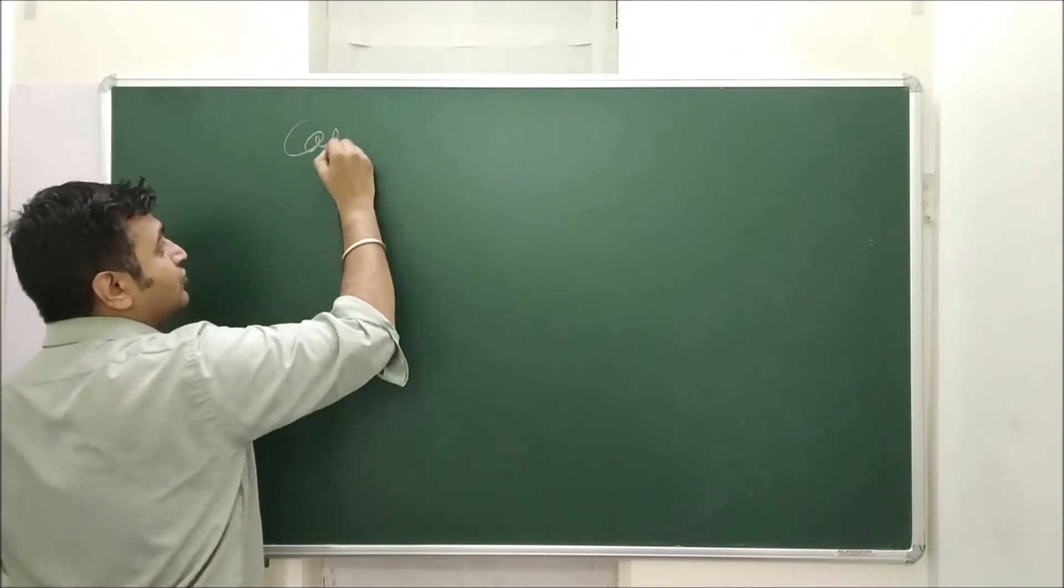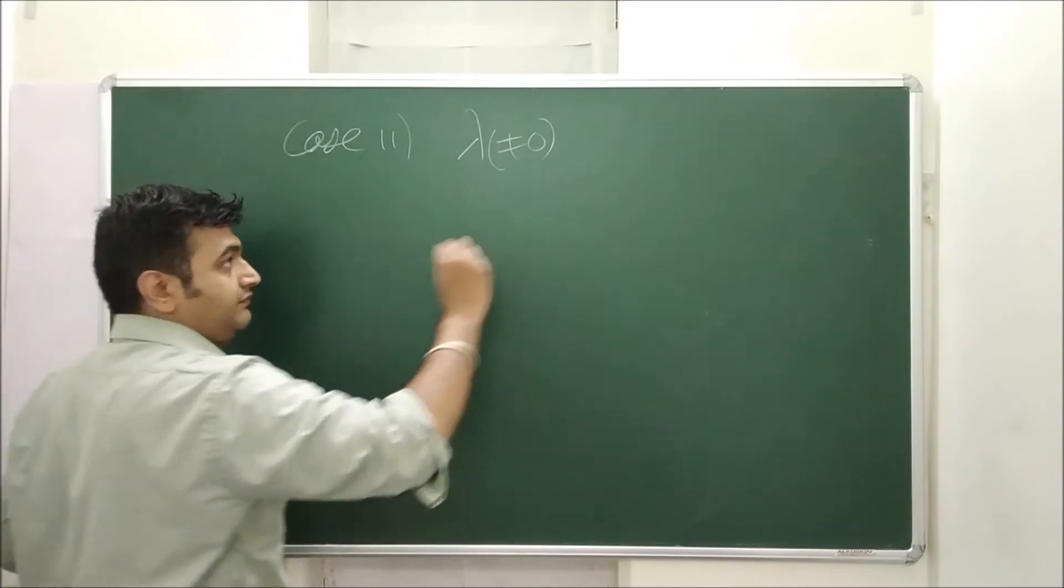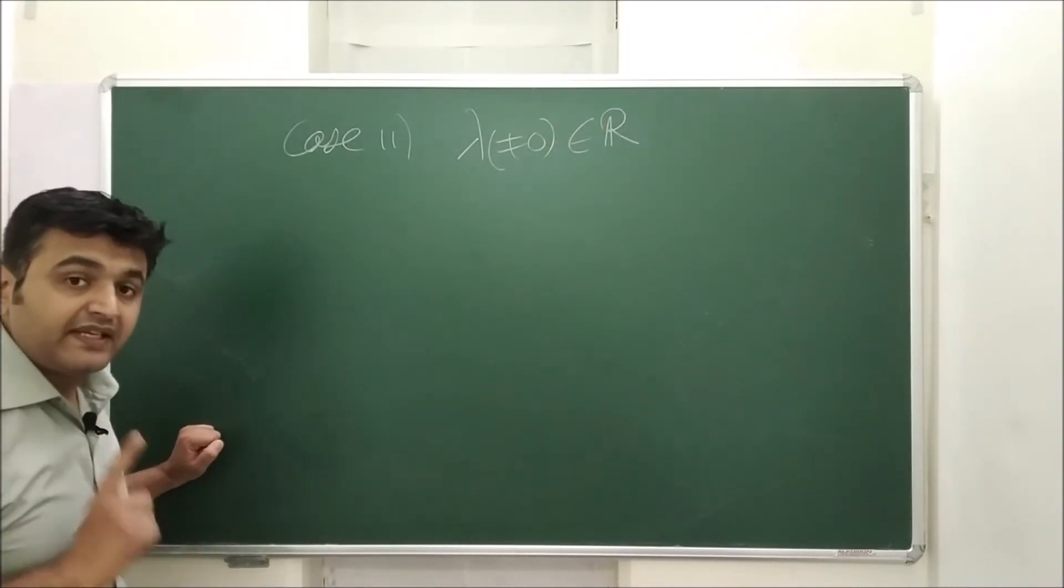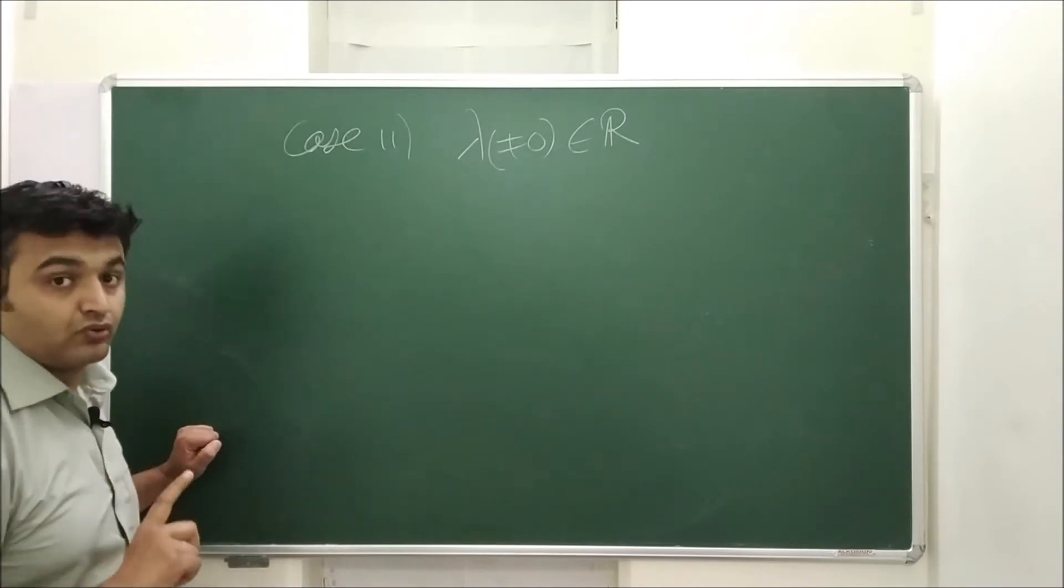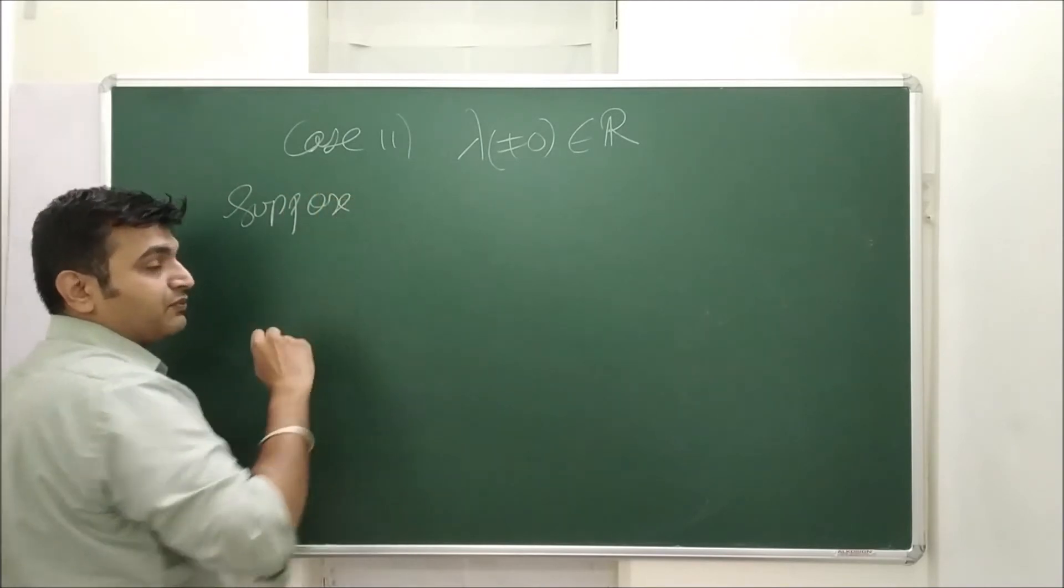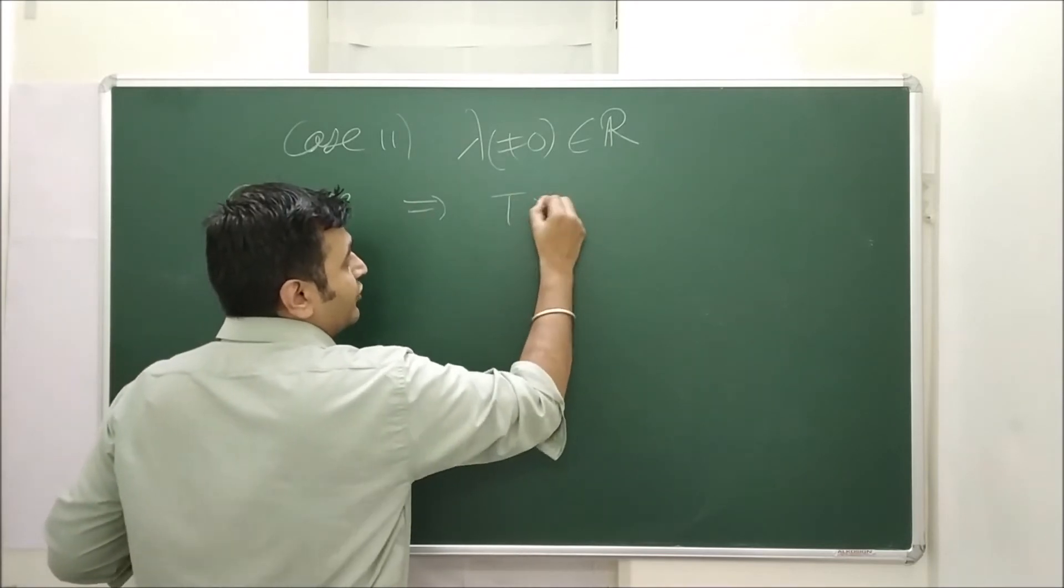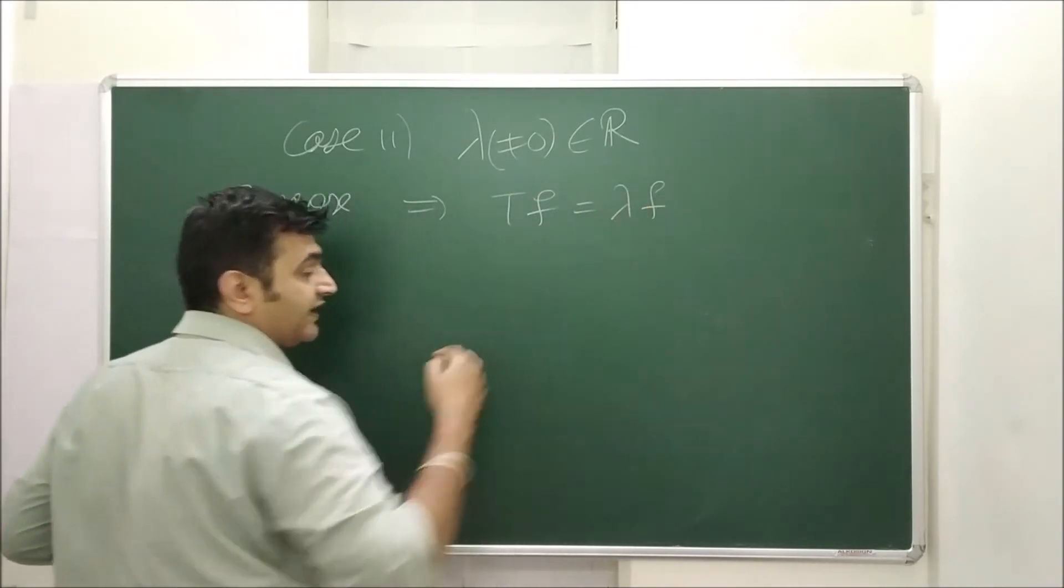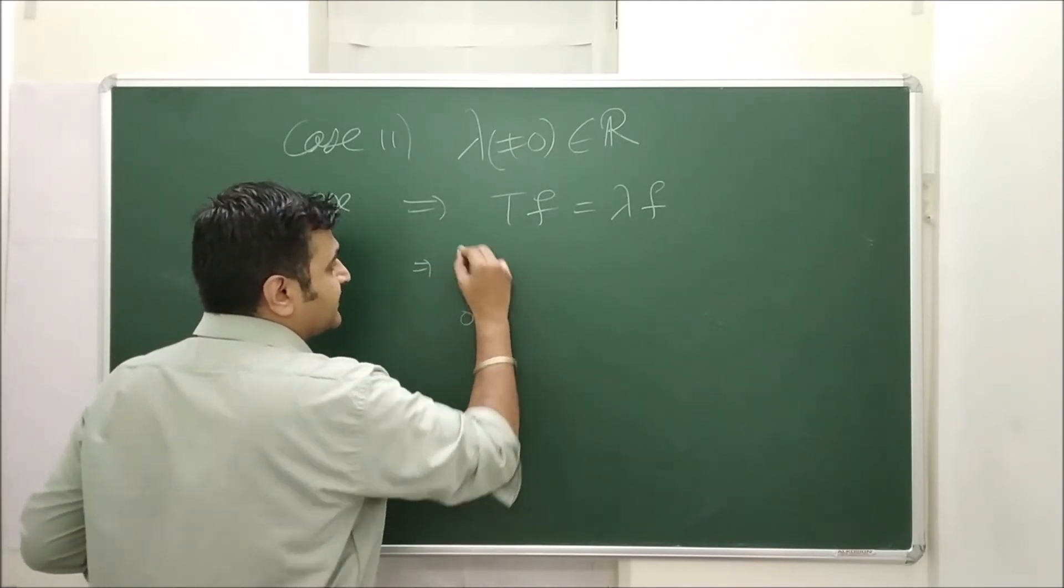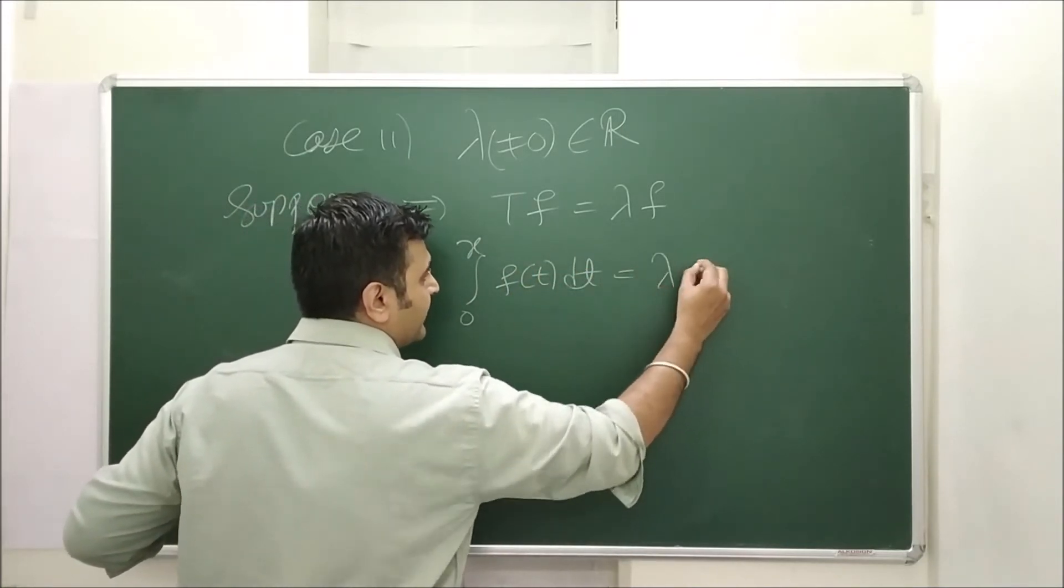Now let's go for my case 2. Our case 2 is suppose your lambda is a non-zero real number. It's a non-zero real number. If lambda is non-zero can it be an eigenvalue? Answer is no. Why? Let's see. Suppose lambda is an eigenvalue. Suppose lambda is an eigenvalue and non-zero. That means what that implies your tf is equal to lambda f where f is an eigenvector non-zero. So this implies what? Integration 0 to x f of t dt is equal to lambda times f of x.